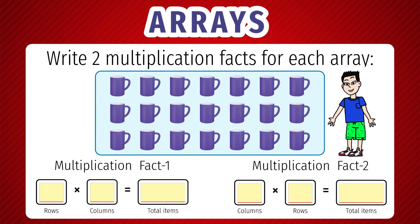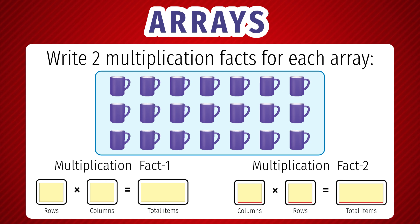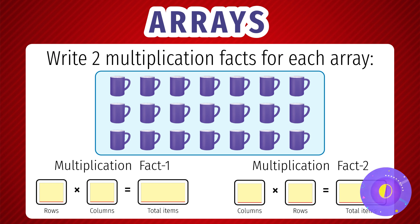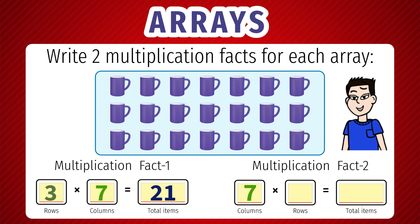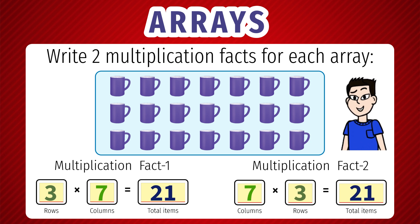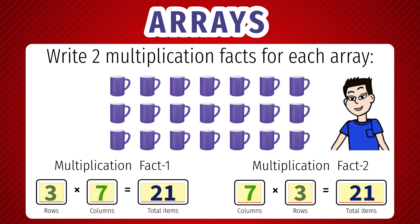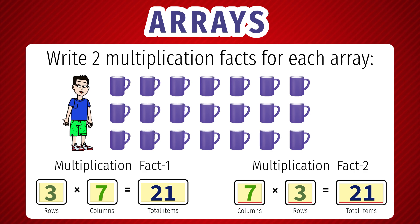Write two multiplication facts for the array shown. The answer lies in the total number of objects. Number of rows is 3, number of columns is 7. So the two multiplication facts are 3 into 7 equals 21, and 7 into 3 equals 21. If you count, 21 is the total number of objects.